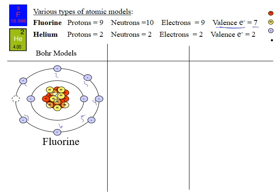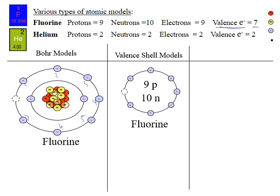We care more about the valence shell of an atom in biology than anything else, because that's where all the chemistry happens. The inner shell really doesn't do anything — it's stable and not reactive. The outer valence shell is where all the exciting stuff happens. So we actually have a model specific just to the valence shell, called the valence shell model. Instead of drawing all the circles for the nucleus, you just write 9p, 10n, and then they don't even show the inner shell — just the valence shell. The inner shell is useless to them because it doesn't do anything chemically.